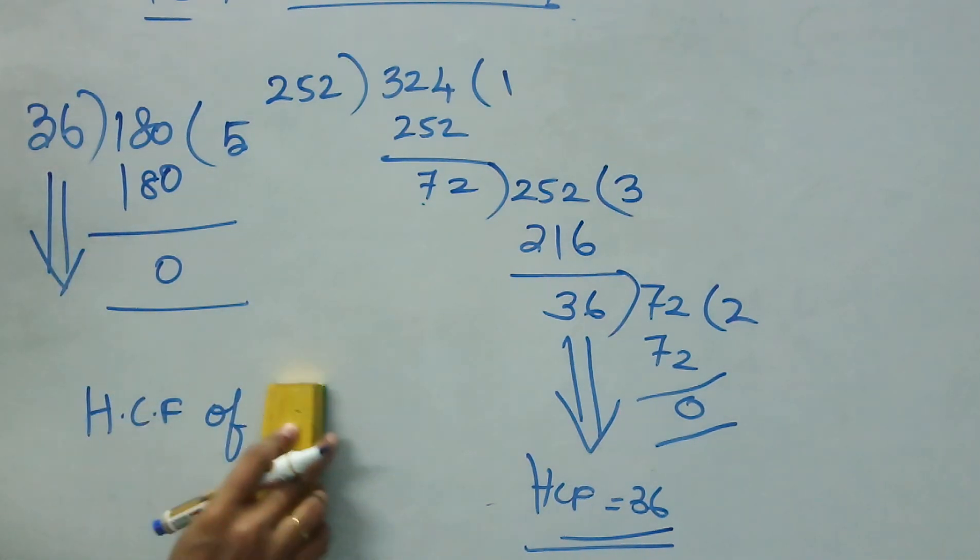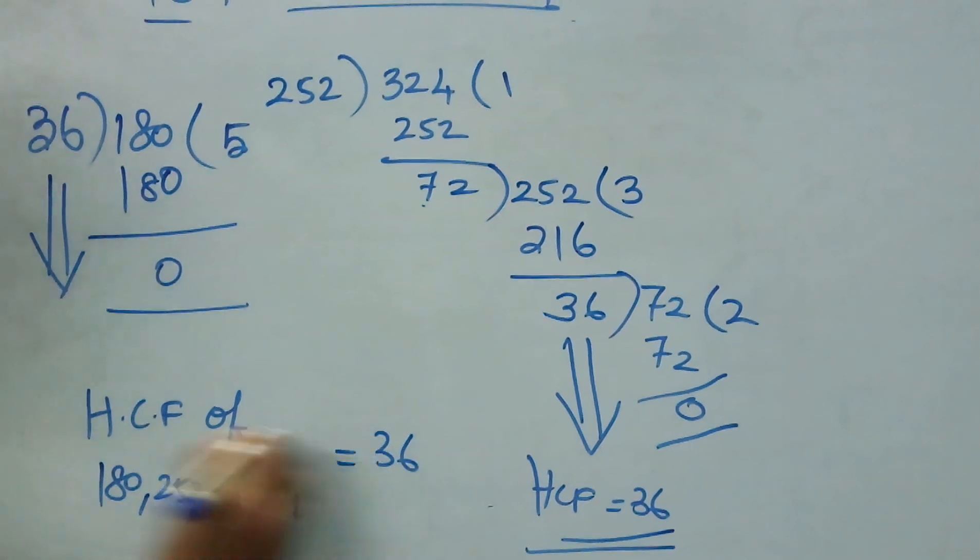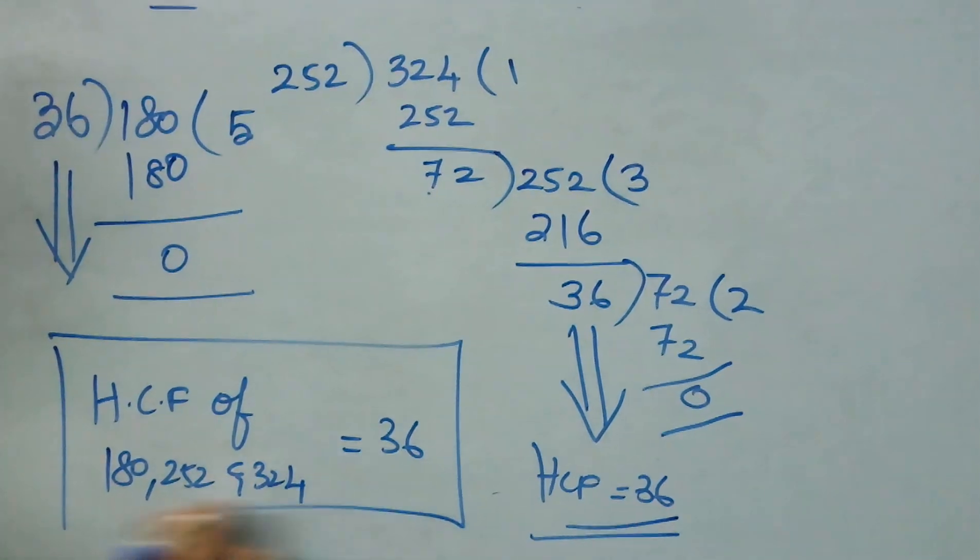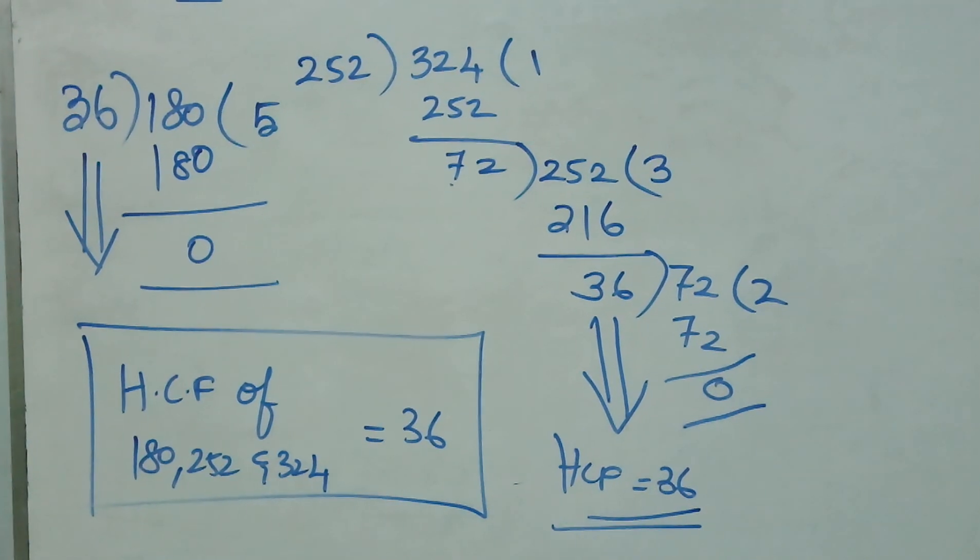Fine. HCF of 180, 252 and 324 is equal to 36. I hope this is clear now. Thank you.